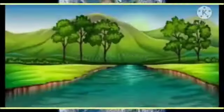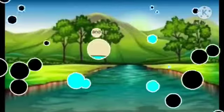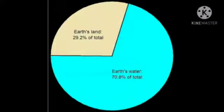Land and Water. The part of the Earth where we live is called land. The rest of the Earth is covered by water. The water-covered parts are called oceans. Oceans cover much more of the Earth than land.